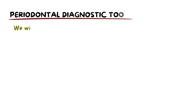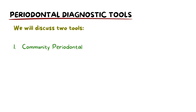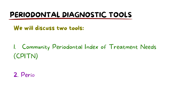Let's discuss the two key diagnostic tools in periodontal health: the Community Periodontal Index of Treatment Needs, or CPITN, and the Periodontal Screening and Recording, also known as PSR.